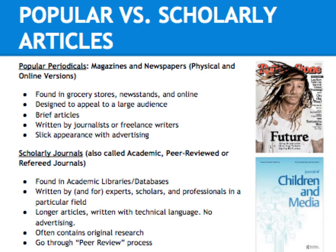Articles in scholarly journals are typically written by and for experts, scholars, and professionals in a particular field, and contain little to no advertising. These articles are also usually pretty long, written in highly technical language, and often contain original research. This means that the authors have conducted some sort of research to prove something new within their field of study. Lastly, scholarly articles typically go through what is called the peer-review process, which is when a panel of experts review the article before it is published.